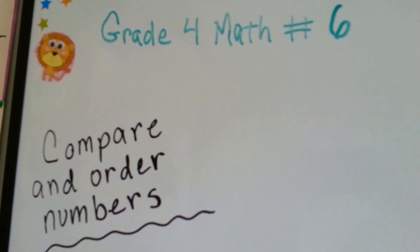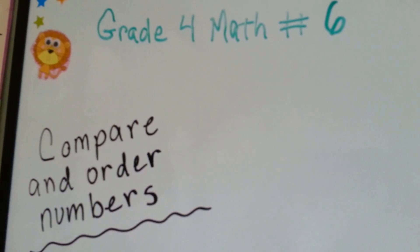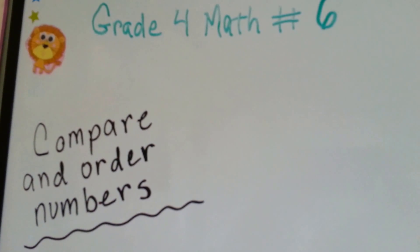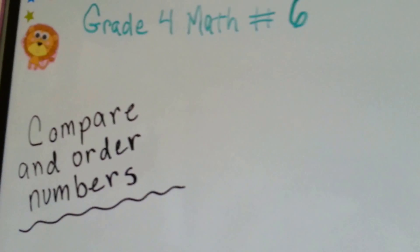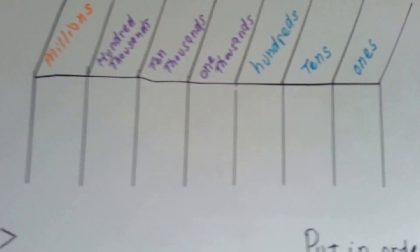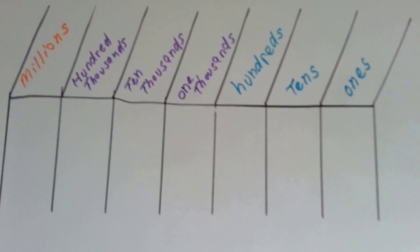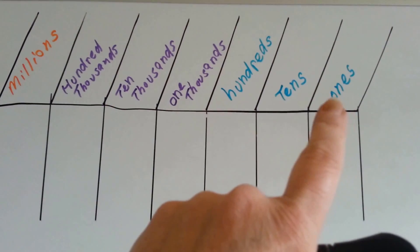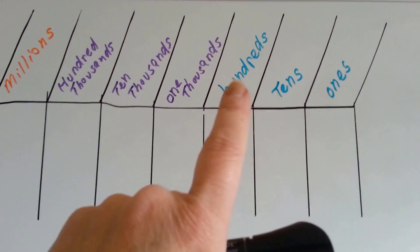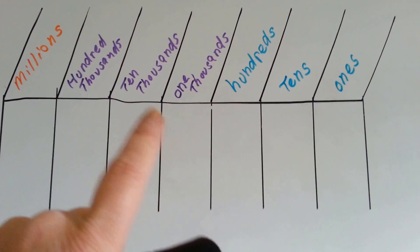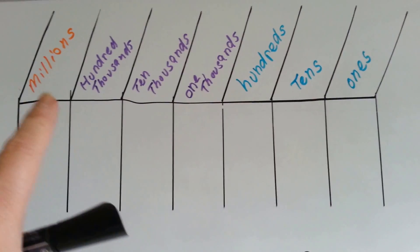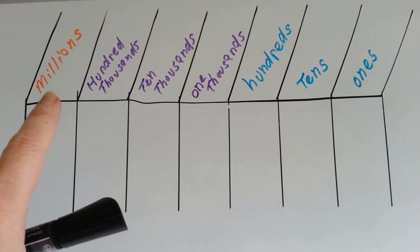Grade 4 math, number 6: Compare and Order Numbers. Remember we're working with millions? So here is our place value chart with our ones, tens, and hundreds, then our one-thousands, ten-thousands, hundred-thousands, and our millions place.